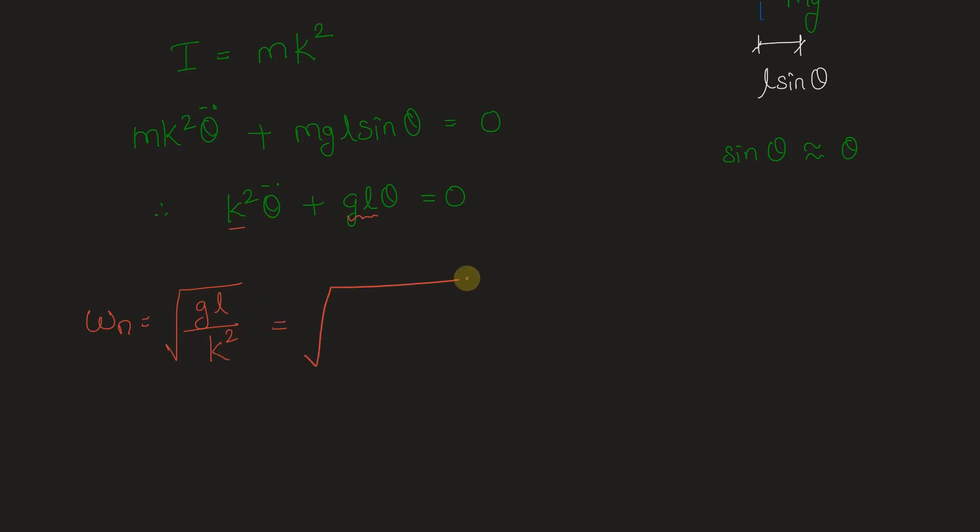Substituting the values over here we have g given as 9.81, l is given as 250 mm. Let's convert it to meter so as to get ωn in radians per second. So we have l is 0.25 m divided by k as 0.1 m whole squared. This amounts to 15.66 radians per second.